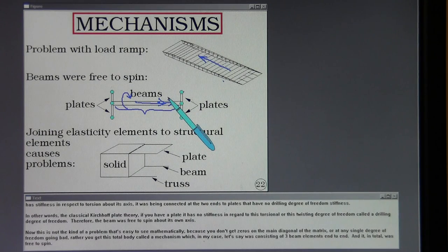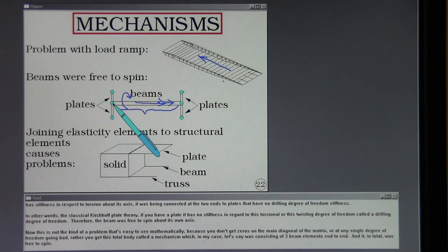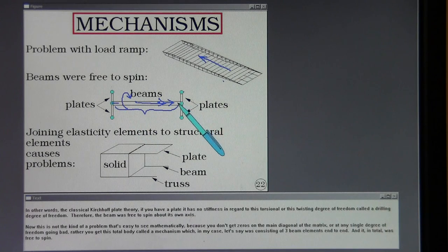In other words, the classical Kirchhoff-Love plate theory, if you have a plate, it has no stiffness in regard to this torsional, or this twisting degree of freedom called a drilling degree of freedom. Therefore, the beam was free to spin about its own axis.